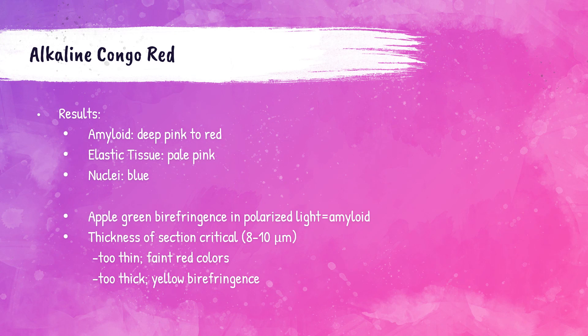When stained with alkaline Congo red, amyloid will be a deep pink to red in color. Elastic tissue will be pale pink and nuclei, if present, will be blue. Under polarized light, amyloid will show a characteristic apple green birefringence. Sections must be cut between 8 and 10 microns — if cut too thin, there will be faint red colors instead of apple green birefringence; if too thick, the tissue will show a yellow birefringence. Thickness is very critical.